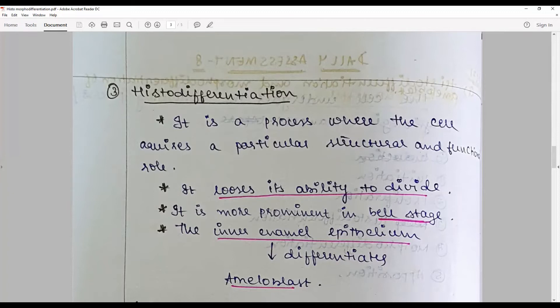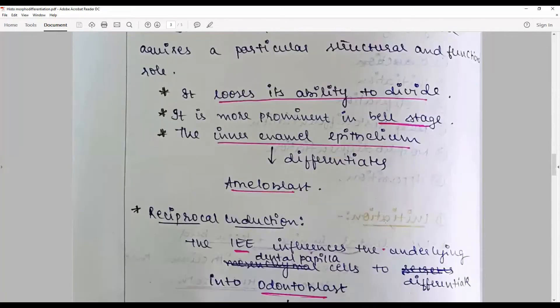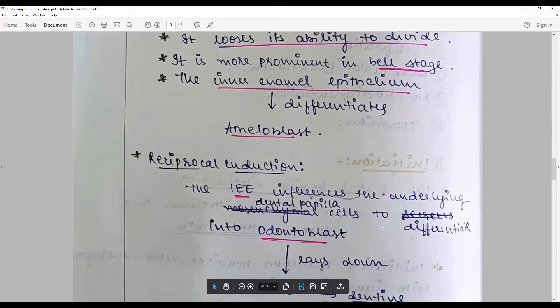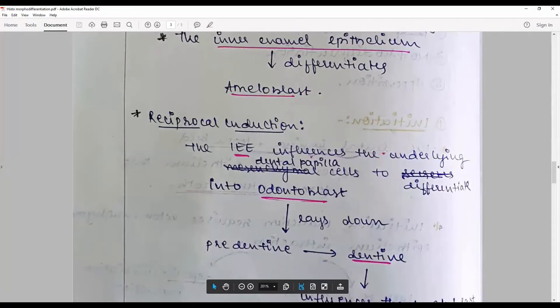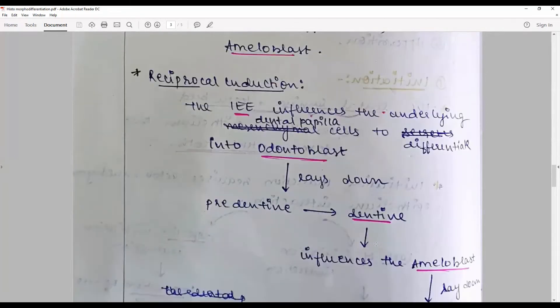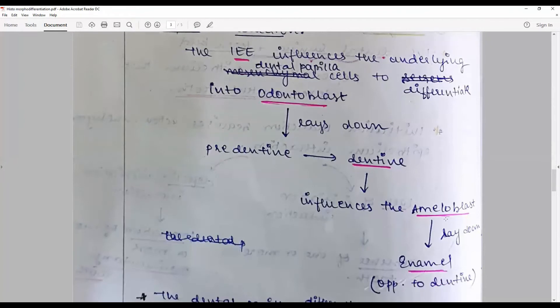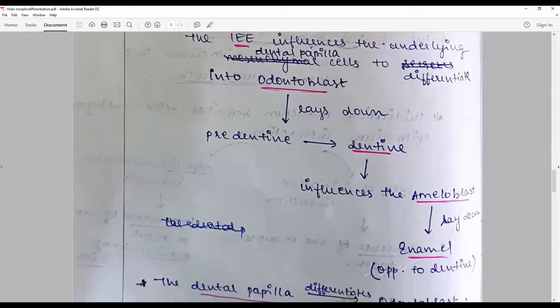At this stage, the outer layer of dental papilla turns into odontoblast, and the inner enamel epithelium differentiates into ameloblast. This entire process where the inner enamel epithelium influences underlying dental papillary cells to differentiate, lays down subsequently predentine and dentine. The first layer of dentine stimulates the inner enamel epithelium to turn into ameloblast and subsequently secrete enamel.